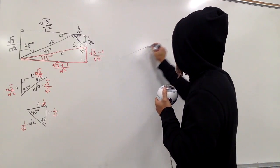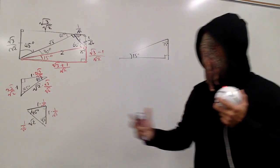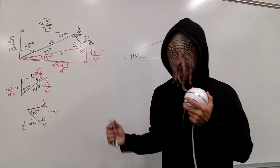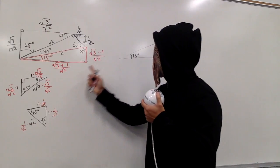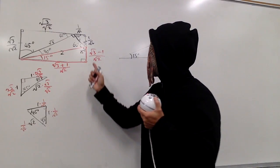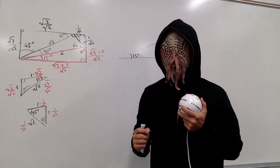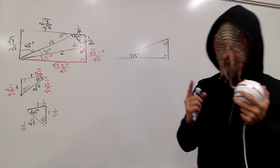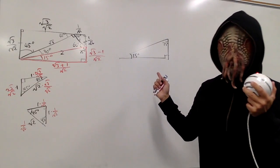So we have this right here. And just like what we did earlier, if you don't really like this denominator, you can just multiply everything by square root of 2.